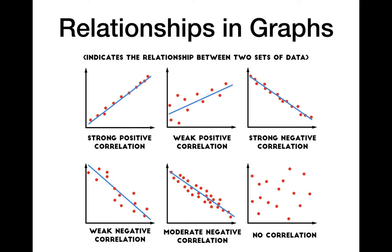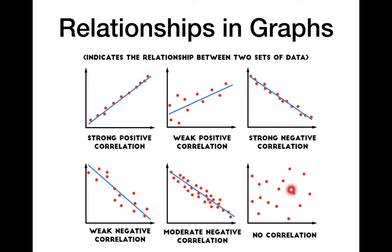We have the word correlation — a correlation means we have a relationship between two variables. So if, as this variable increases, this variable also increases in a very strong linear way, that's a strong positive correlation. If it's not as close to a 45-degree angle, it's a weaker correlation — the points are scattered further away from the line of best fit. If as one increases the other decreases, it's a negative correlation, and that can be strong, weak, or moderate. If the data points are all scattered randomly, there's no correlation — no relationship between the variables.